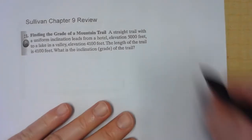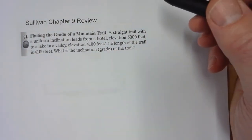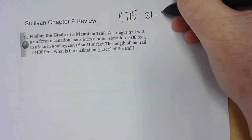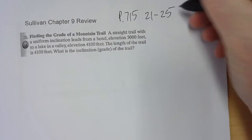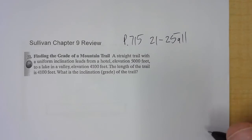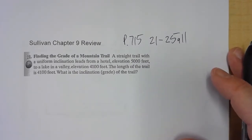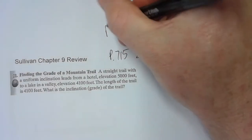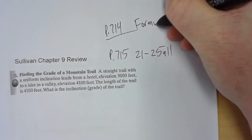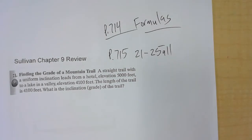The review questions for chapter 9 will be on page 715, and we're going to look at problems 21 through 25. The way this video works is I'm going to introduce the problem, you try the problem, and then you can play the video and see if you got the correct answer. The formulas are on page 714 — law of sines, law of cosines, and the area of triangles.